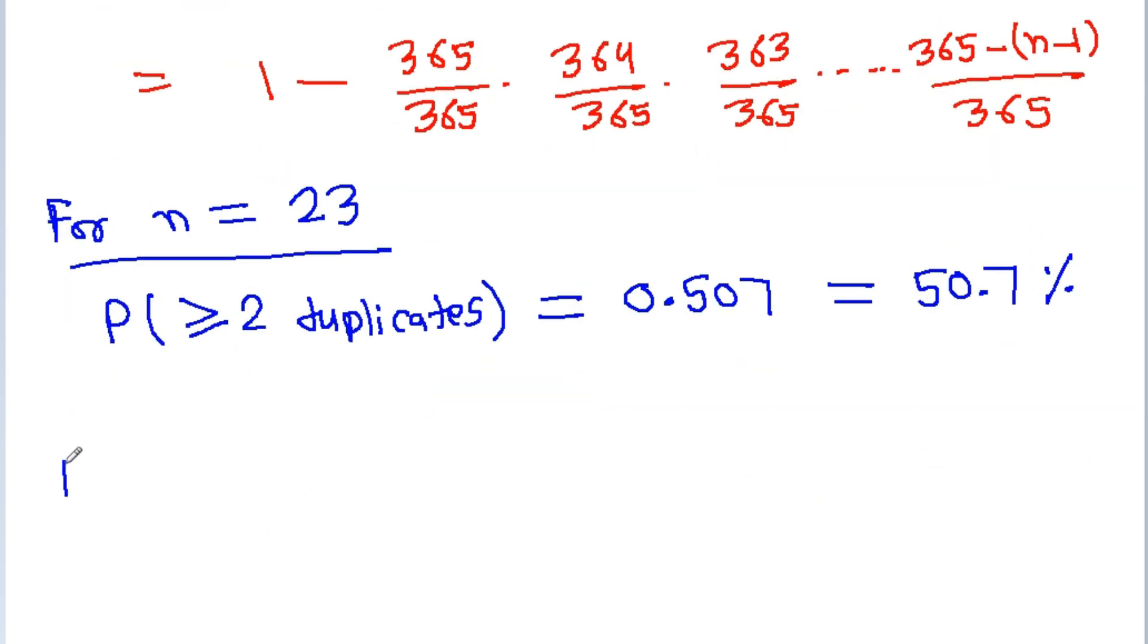If we put n equals 75, that is equal to 99.9 percent. If we put n equals 75 in this, then we get 0.999, that is equal to 99.9 percent.